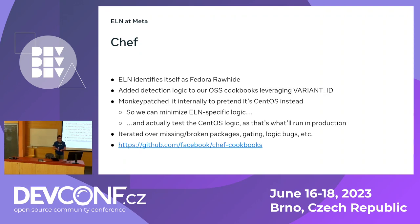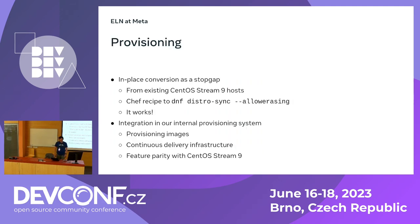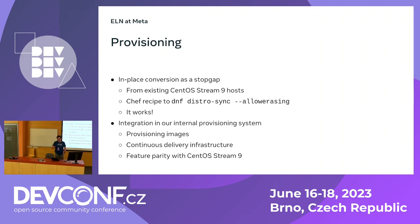Now we have config management, so we want to do provisioning. Provisioning at Meta is complicated, and there's a circular dependency — you need Chef to have provisioning working and vice versa, because the provisioning images are built with Chef. So we did another somewhat horrible thing, which was converting in-place existing CentOS Stream 9 hosts to ELN with DNF distro-sync. To my surprise, this actually works — not only does it work, but it produces systems that still boot. I would not do this in production, but it worked very well for development: I was able to take development systems, convert them in place, iterate quickly on the Chef stuff, and then later get the provisioning images going so we could provision machines from scratch.